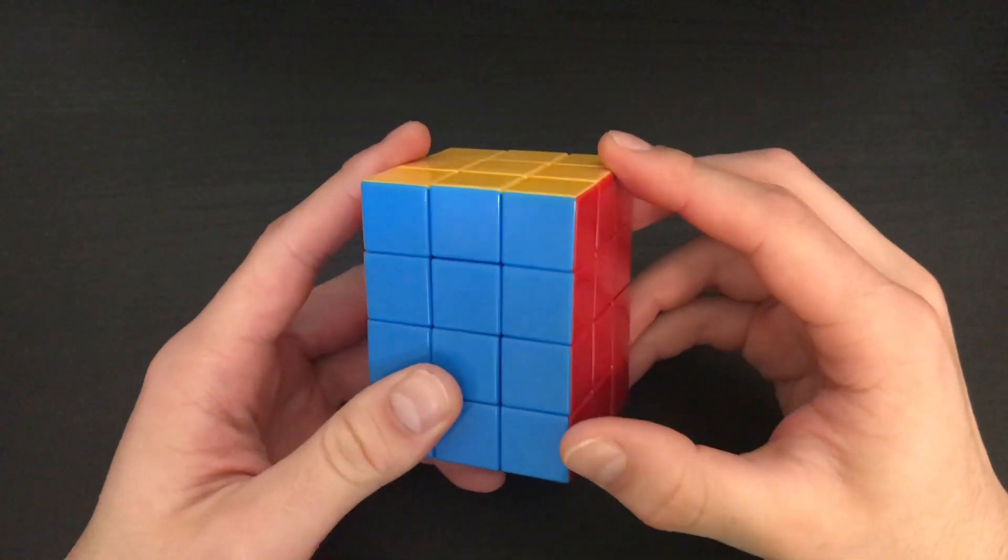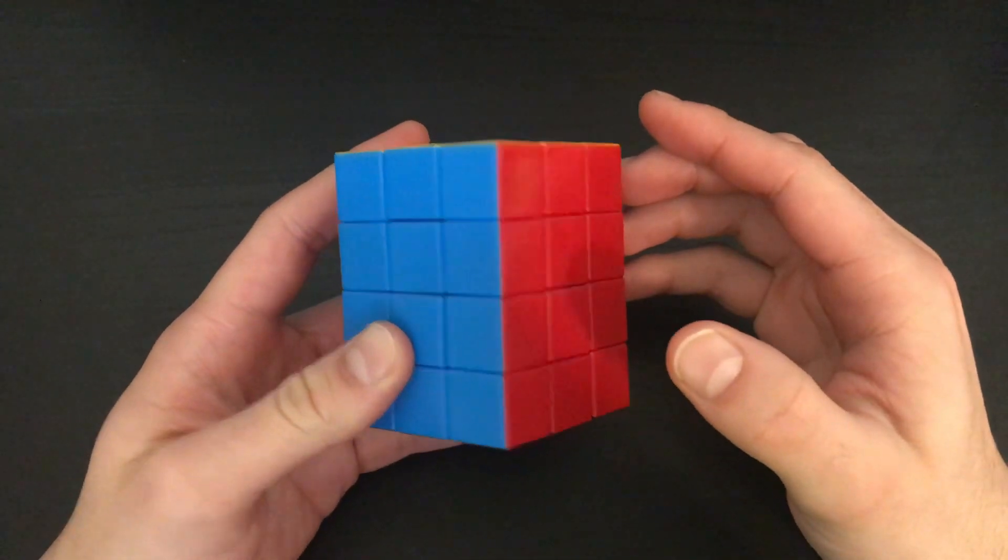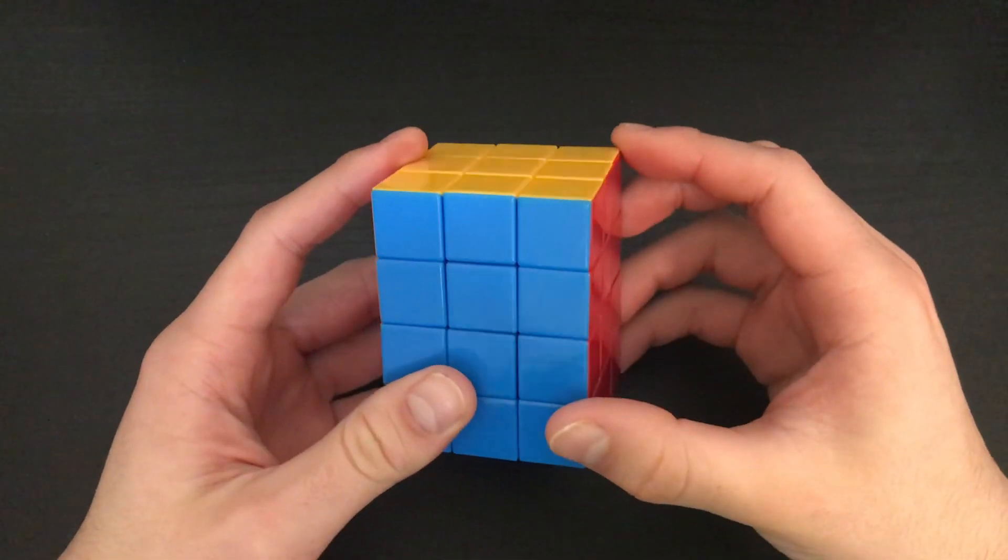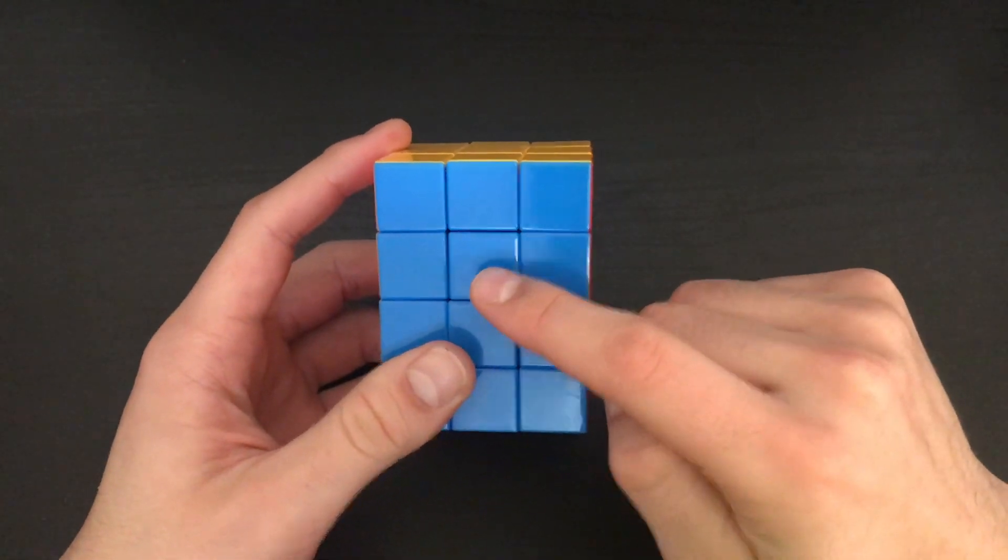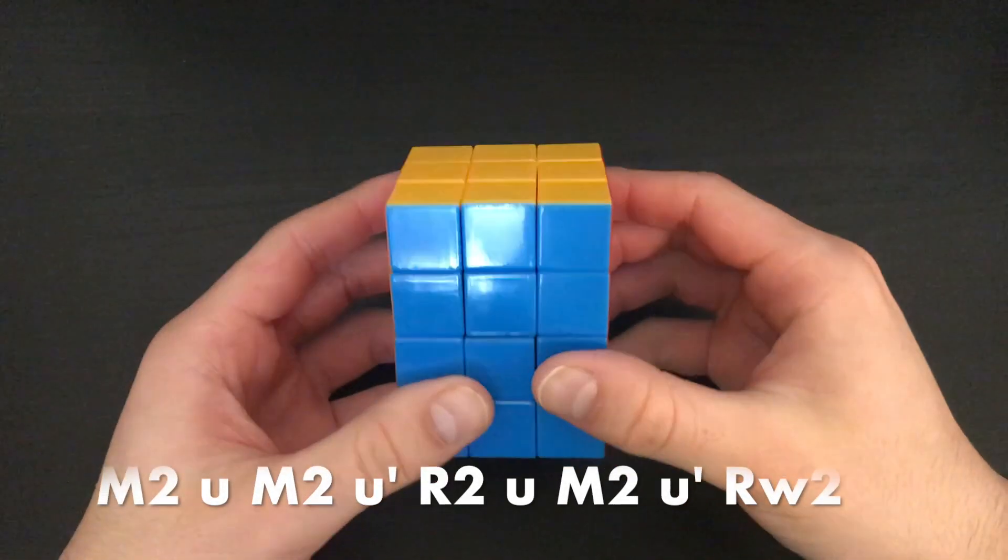Finally, we're at centers, which is the hardest part because we can't borrow any algs from n-by-n's. The buffer I use is FU, and this alg cycles FU, RU, and RD, and it looks like this.